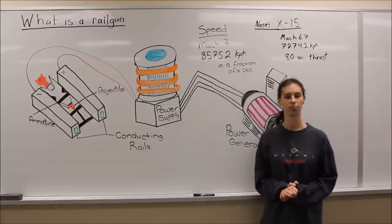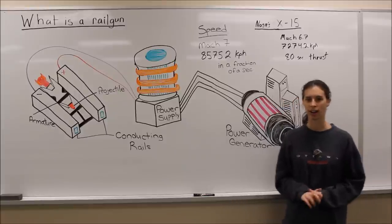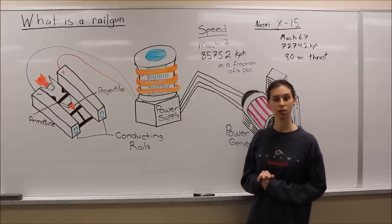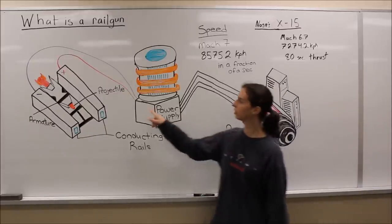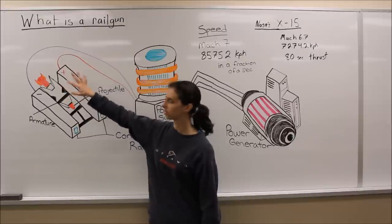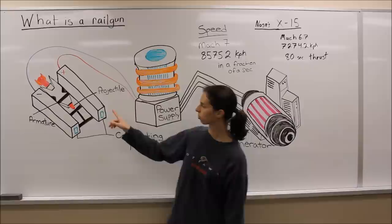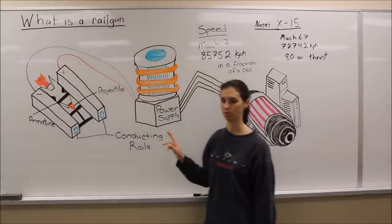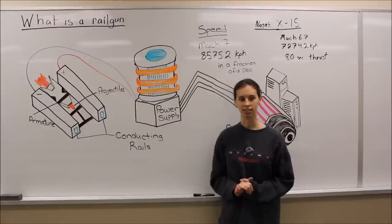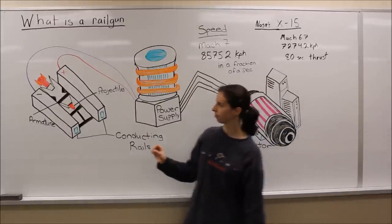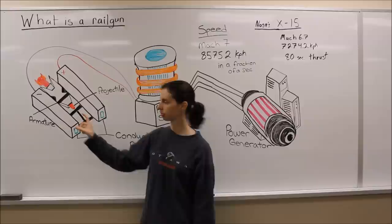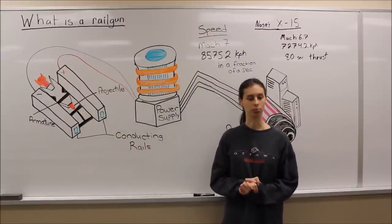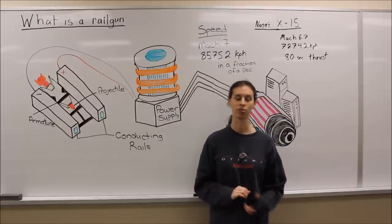How does a rail gun work? You have the generator, which gives power to the power supply, which then creates an electric current that runs from the positive terminal down the positive rail, which goes across the armature, up the negative rail, and back to the negative power supply. This creates the electrical current. After the projectile has been released from the armature and passed the rails, it then breaks the circuit, which ends the flow of current.